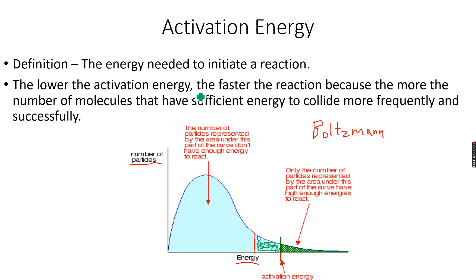The lower the activation energy, the faster the reaction, because there are more molecules that have sufficient energy to collide more frequently and successfully. This is how we interpret a Boltzmann distribution curve.